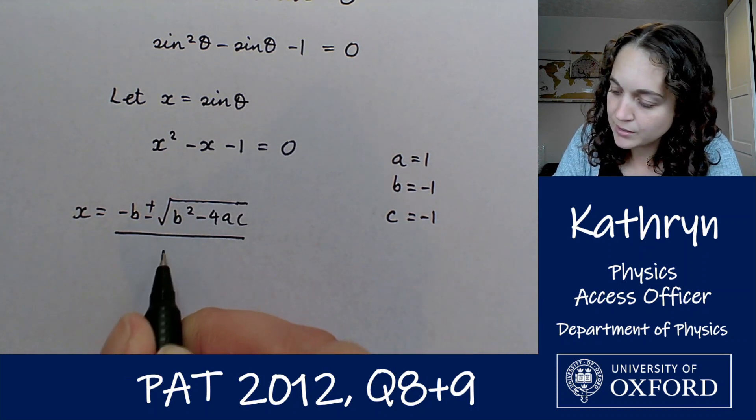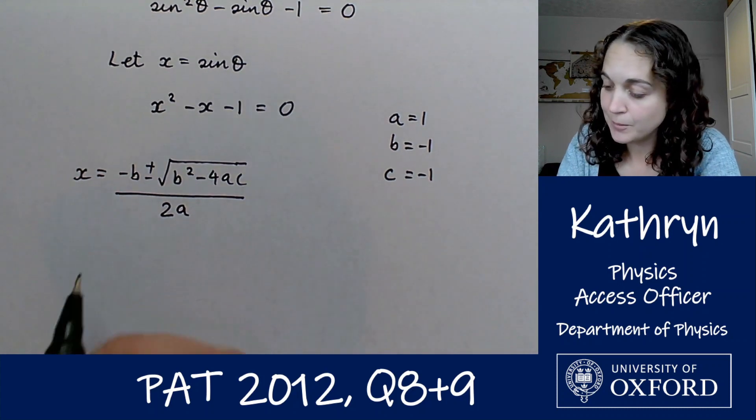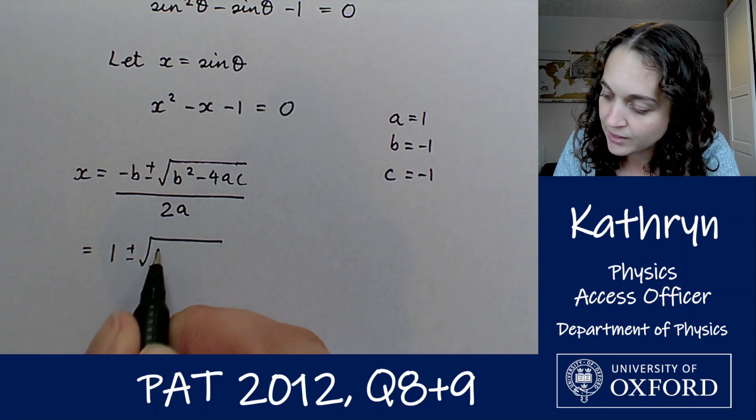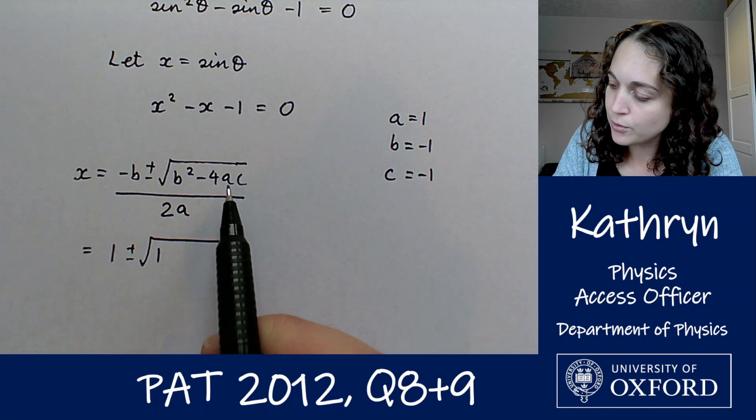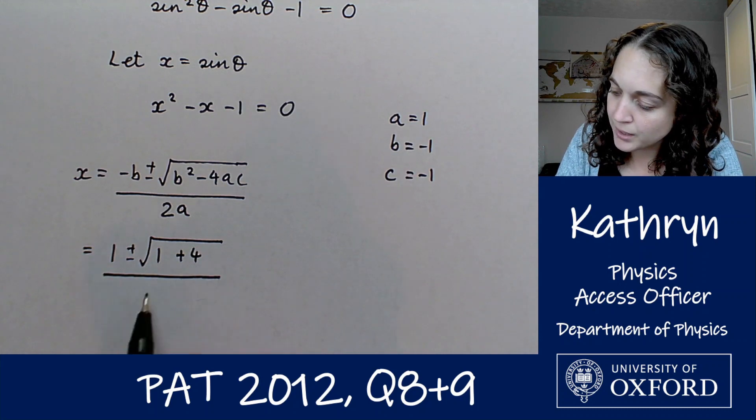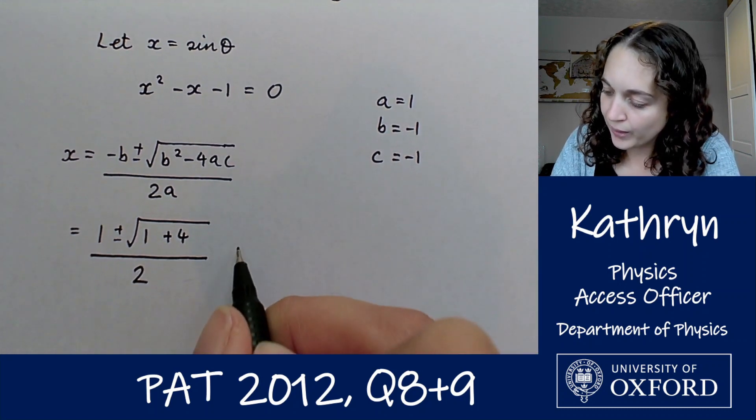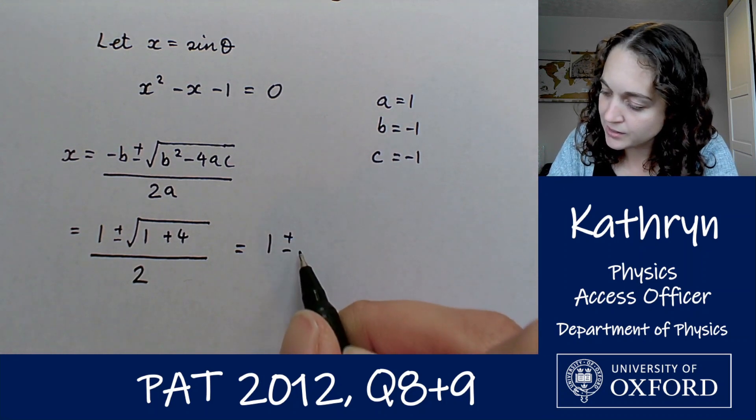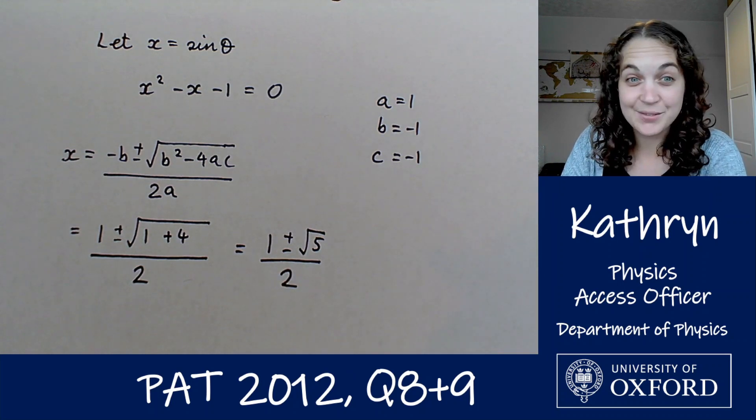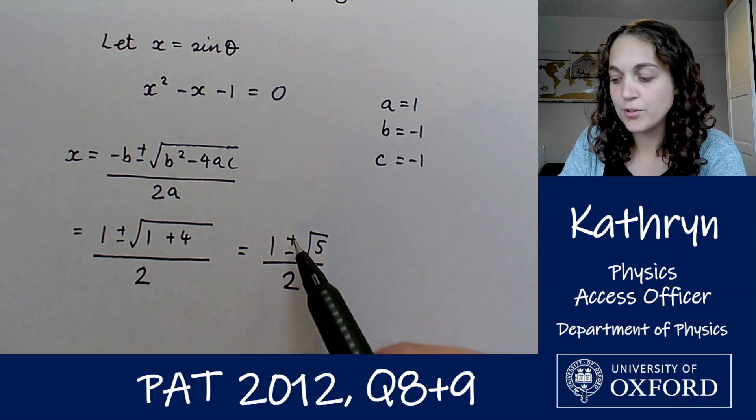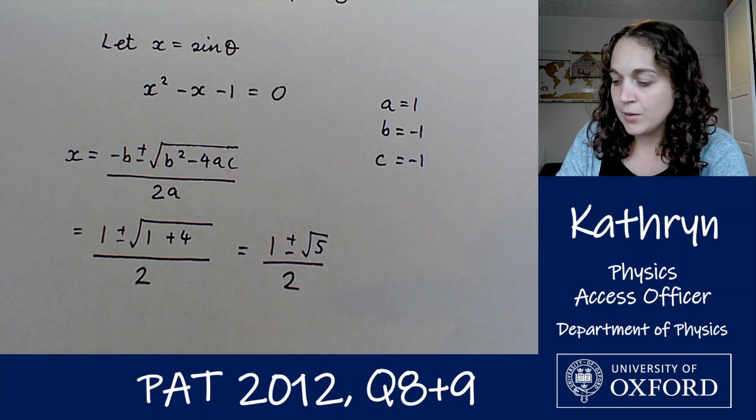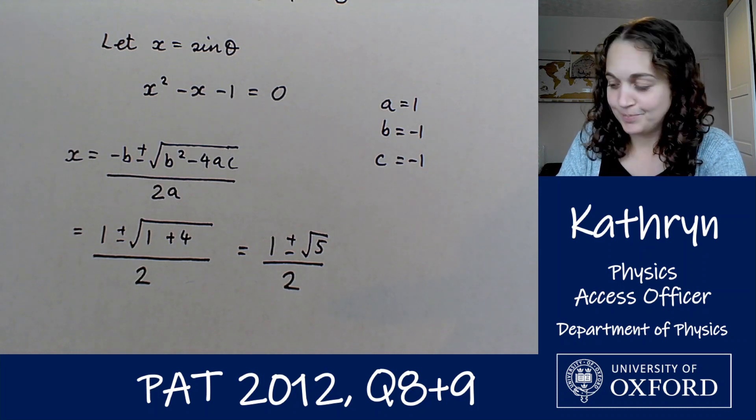In which case we have that a = 1, b = -1, and c = -1. That's assuming the standard form of ax² + bx + c = 0. And our quadratic formula tells us that x = -b ± √(b² - 4ac) all divided by 2a. Then we can just substitute in, so -b is going to give us 1 ± √((-1)² is 1 minus 4 times 1 times -1 is just going to be plus 4), and then all divided by 2. So that is 1 ± √5 divided by 2.